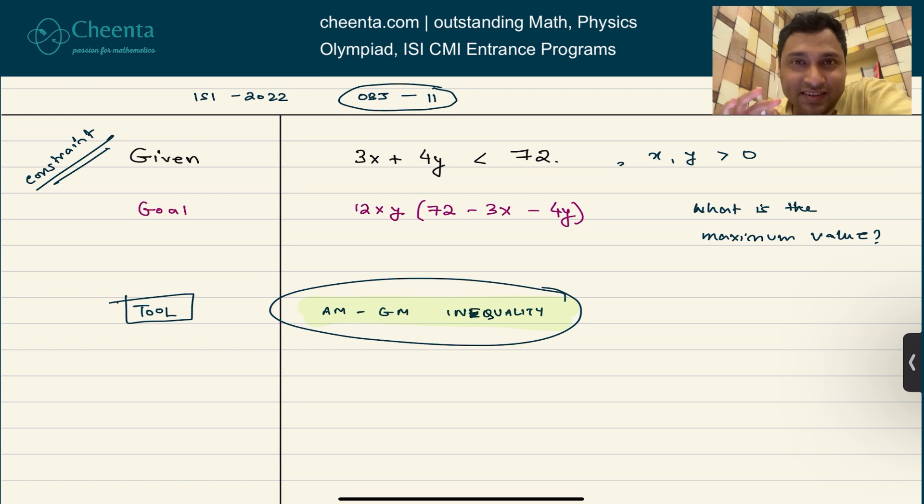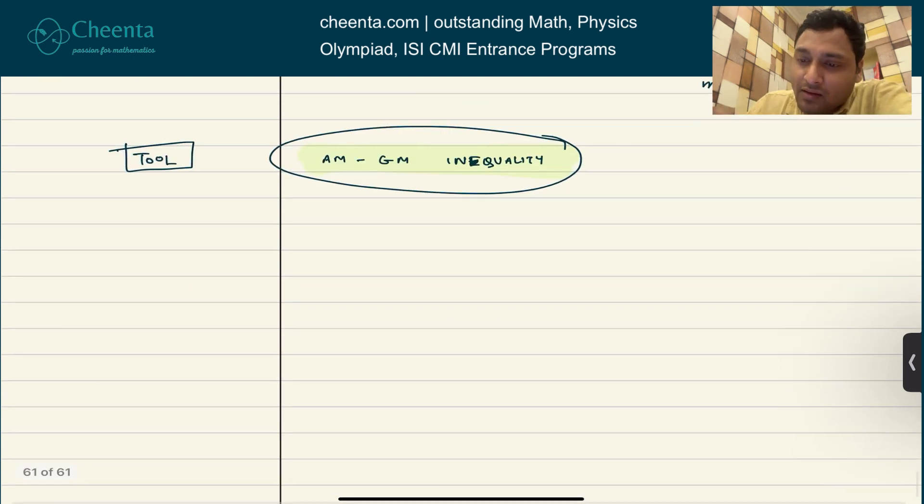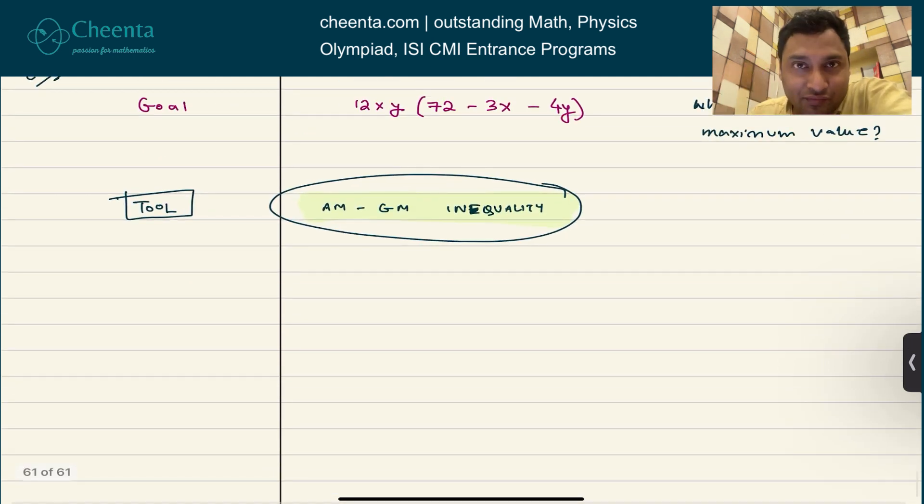And interestingly enough, we will use AM-GM inequality here. This is a very nice application of it. If you want to maximize something, AM-GM or power mean inequality can be a very useful tool for you. I will give you the crux of the strategy. We discussed this in the algebra module of the ISI CMI entrance program at Chinta and math olympiad program at Chinta. So you can check the link in description for those programs.